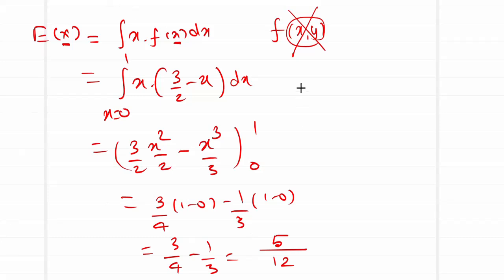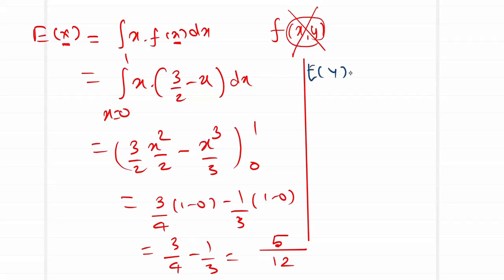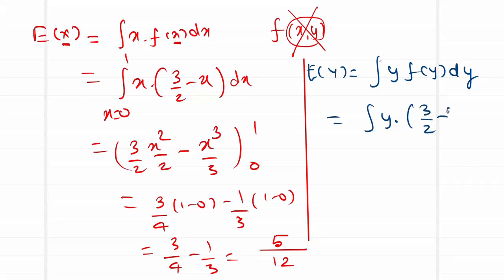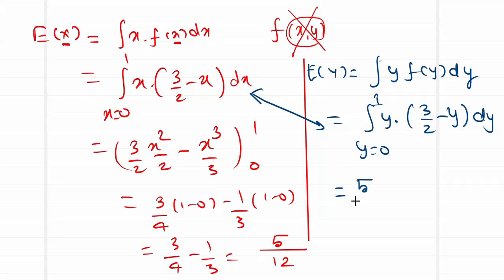Moving on to E[Y]: it is given by the integral of y · f(y) dy, which becomes the integral from 0 to 1 of y · (3/2 - y) dy. We can observe that this is identical to the E[X] calculation with just the variable x replaced by y. So we can conclude that E[Y] = 5/12 as well. This completes estimation of E[X] and E[Y].